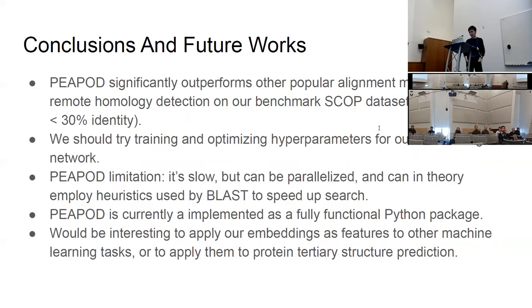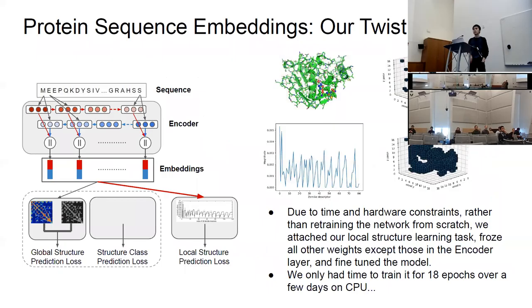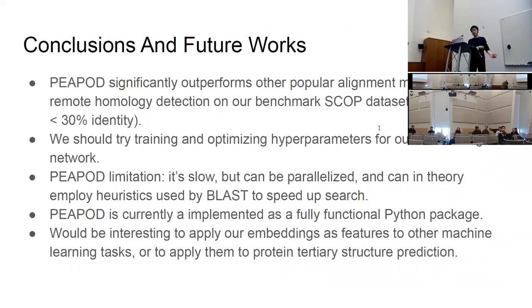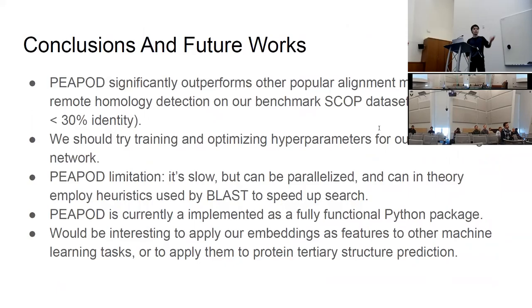In conclusion, we can align protein embeddings and that works very well for remote homology detection. Future directions include fine-tuning our model further to squeeze more detection efficacy out of it, and exploring other auxiliary tasks to incorporate more information into the embeddings — such as coevolutionary information or position-specific scoring profiles. EPOD is currently a fully functional Python package, though it is quite slow. With more time, one could parallelize it or use approximate nearest-neighbor search to speed it up. These embeddings are also useful for other tasks like structure prediction and drug discovery projects.